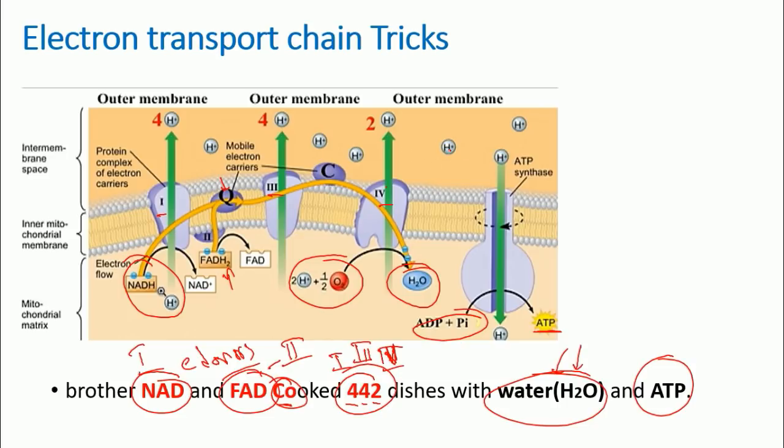That's how the protons are pumped out into the intermembrane space. As the concentration of proton increases in the intermembrane space, the proton gradient is utilized via a pump known as ATP synthase enzyme, which is also known as complex five sometimes. The proton from intermembrane space is transported into the mitochondrial matrix.